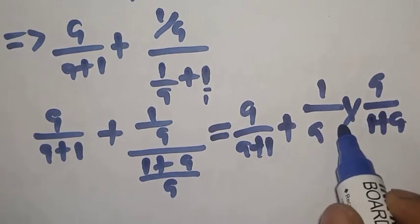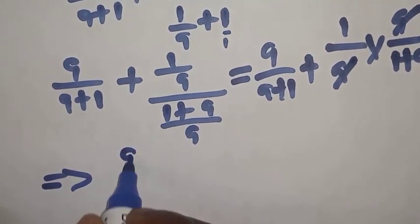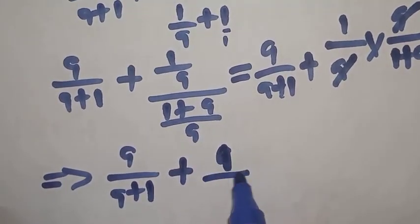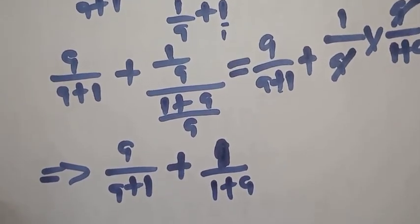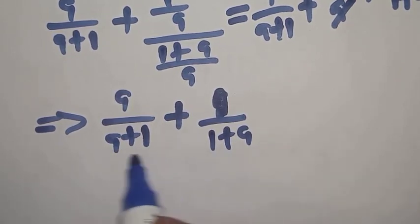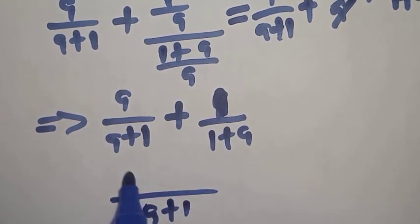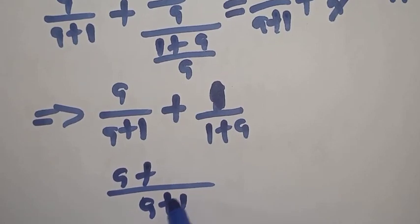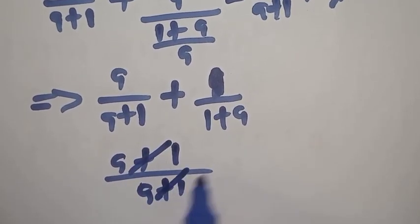1 over A times A over 1 plus A — the A's cancel. This implies we have A over A plus 1 plus 1 over 1 plus A. Now let's find the LCM. A plus 1 and 1 plus A are the same thing. LCM is A plus 1. A plus 1 goes in, we get 1 times A is A, plus 1 plus A goes in A plus 1 is 1, 1 times 1 is 1. So we have A plus 1 all over A plus 1, which cancels.